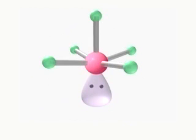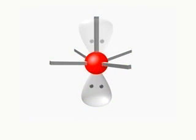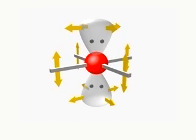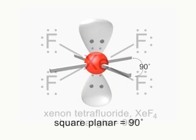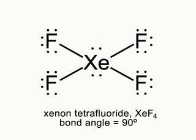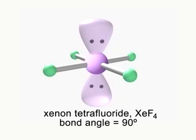To minimize repulsions, a second lone pair must lie 180 degrees from the first. The four remaining bonding groups are repelled to the ideal 90 degree angle and define the square planar shape. Xenon tetrafluoride, one of the first noble gas compounds to be made, is a square planar molecule.